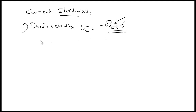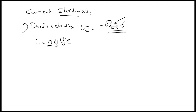Now, what is the relation connecting drift velocity and current? The relation is I = nAVd, where n is the number of electrons per unit volume, A is the area of cross-section of the conductor. So, Vd = -eE/mτ and I = nAVd.